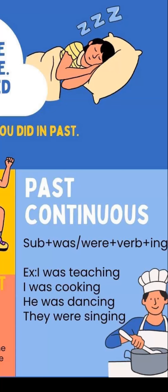Examples of past continuous: I am teaching becomes I was teaching. I was cooking. He was dancing. They were singing. I was making or creating your app. I was developing your website. I was designing your t-shirt.